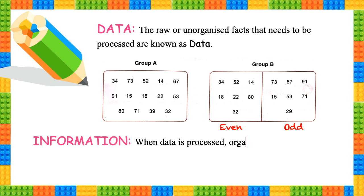What is information? When data is processed, organized, structured, or presented in a useful manner, it becomes information. Group B, which we have sorted into even and odd, is called information because it is giving us meaningful data. Meaningful data or processed data or organized data is called information. Therefore, Group A is data and Group B is information.